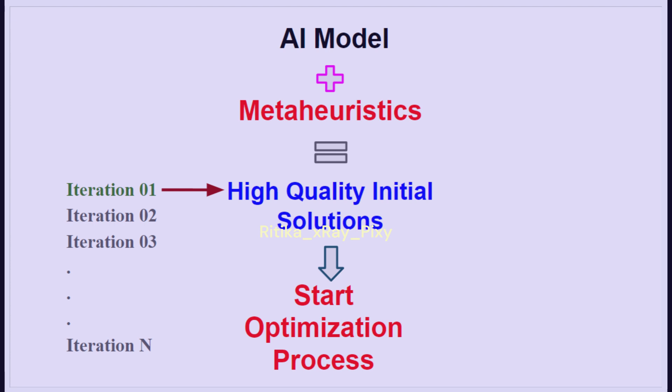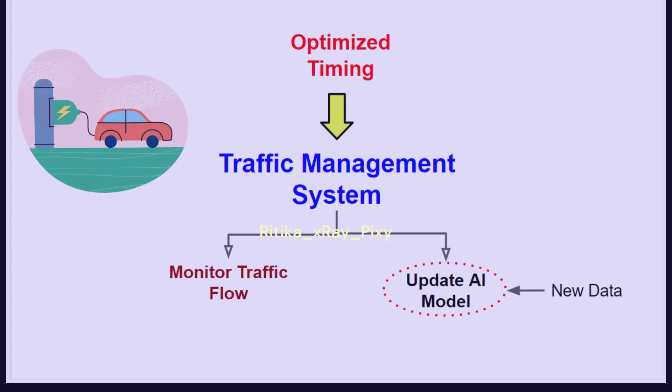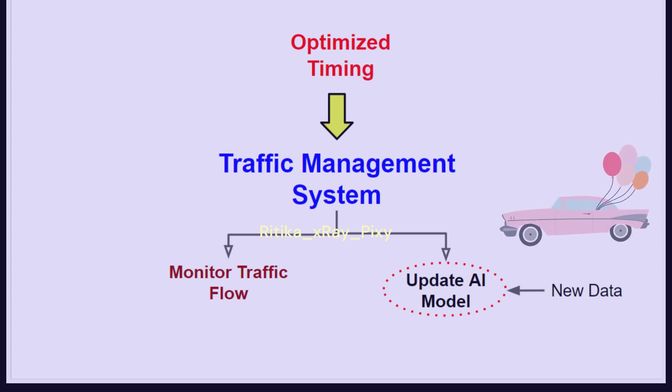Starting with high-quality solutions from AI predictions, we further run the optimization process. We can use any algorithm to optimize the route and prioritize high-traffic areas on the road. We run the specific algorithm to find the best traffic signal timing and evaluate solutions based on predicted traffic time and traffic jams. We then apply the optimized traffic signal timing to the traffic management system, monitor the traffic flow, and update the AI model with new data to avoid accidents and other errors. The AI model is continuously updated with new data to improve predictions based on real-time information.